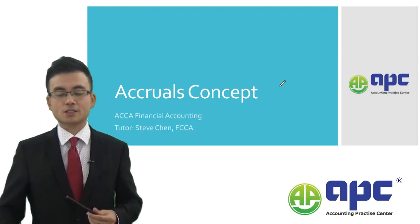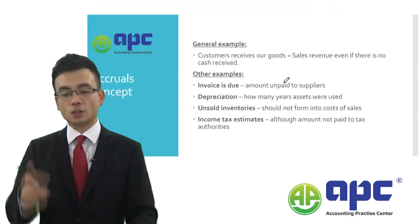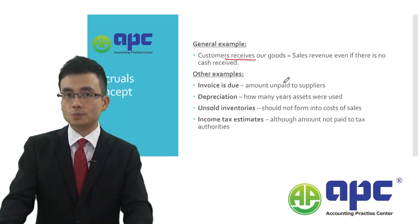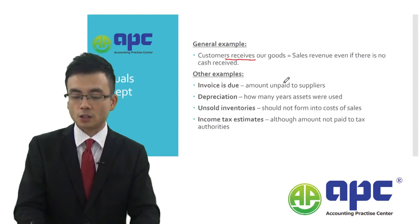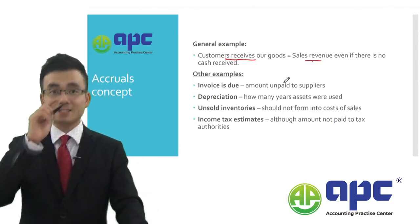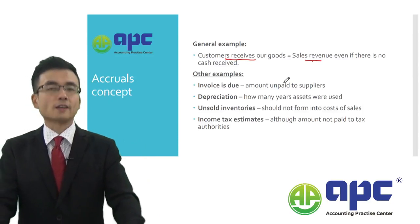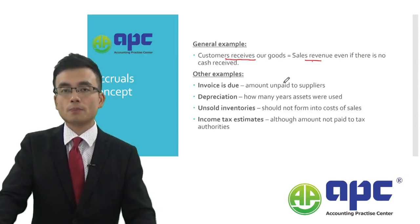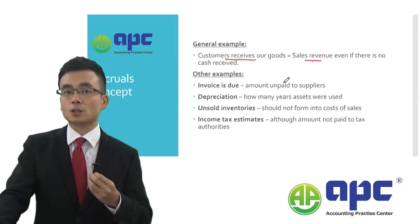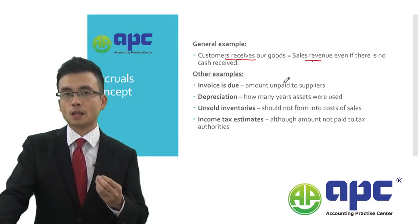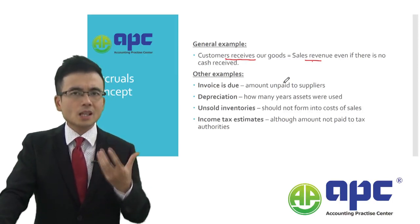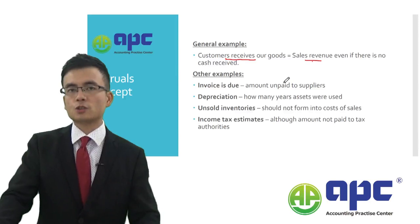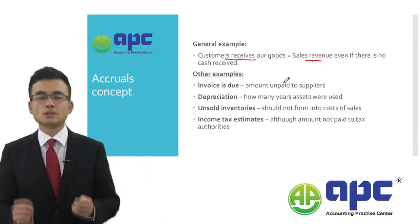For example, a business sells goods to a customer and the customer receives them. When the customer receives our goods, we should recognize revenue. Because the customer hasn't paid cash yet — they will pay at some point in the future, for example in 20 days — we still need to recognize revenue at the time the customer receives the goods, and at the same time we recognize the accounts receivable.